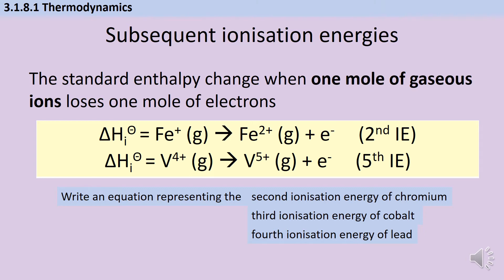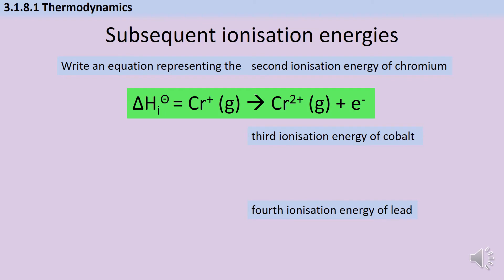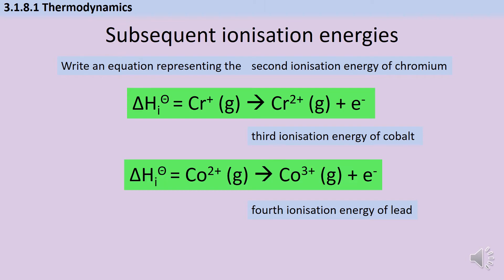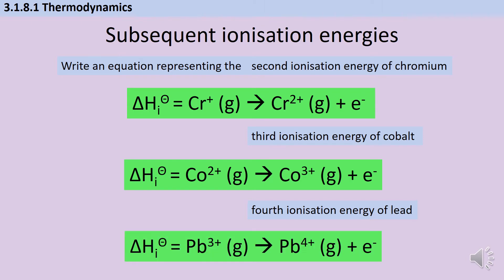For each ionization energy, the number of the ionization energy should be the same as the charge on the ion you finish with. So for the second ionization energy of chromium we finish with Cr²⁺, for the third ionization energy of cobalt we finish with Co³⁺, and for the fourth ionization energy of lead we finish with Pb⁴⁺.